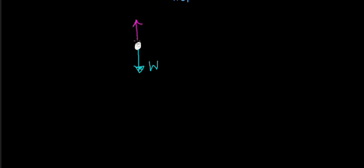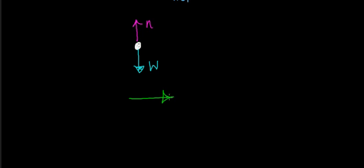We represent the object with a dot. This object has mass, therefore it has weight. The other force acting on this car is the normal force — the ground pushes the car in the upward direction. I also want to draw the velocity vector, which is technically not part of the free body diagram but is important to understanding this problem. This car is initially moving in the positive x direction.